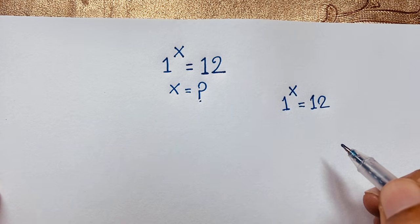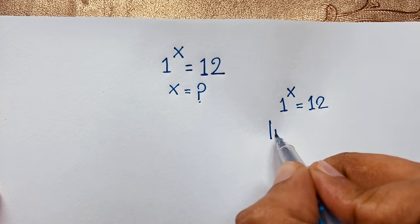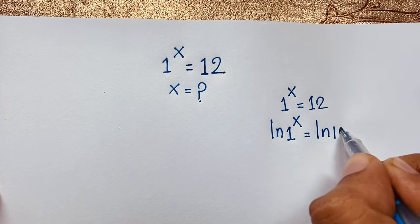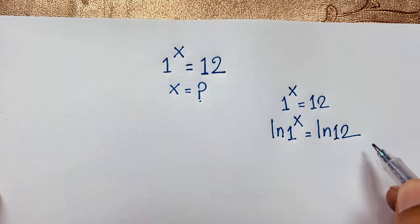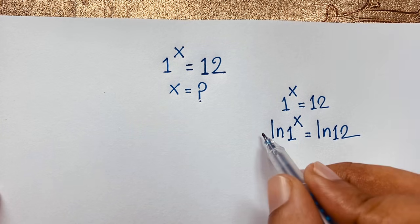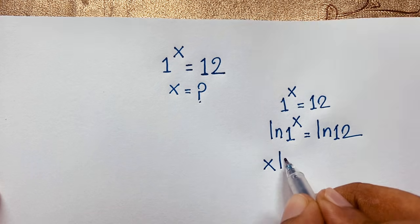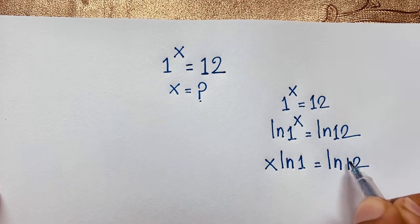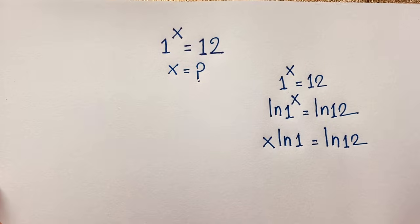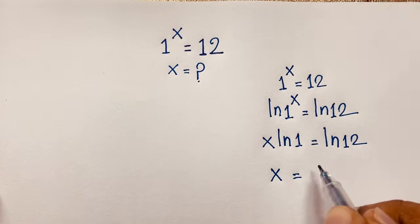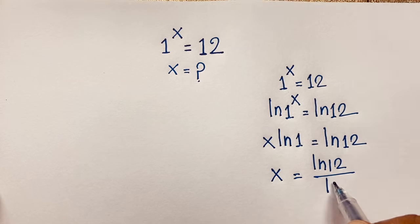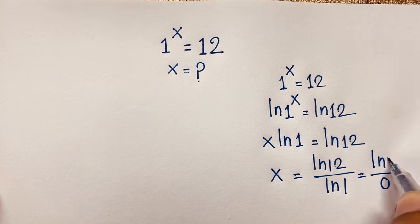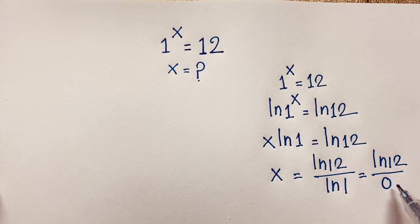Now, if I apply natural log to both sides, we get ln(1^x) = ln(12). According to the natural log formula, the x moves to the front, so it becomes x·ln(1) = ln(12). If I divide both sides by ln(1), then x = ln(12) / ln(1). But remember that ln(1) = 0, so ln(12) divided by 0 is not possible.